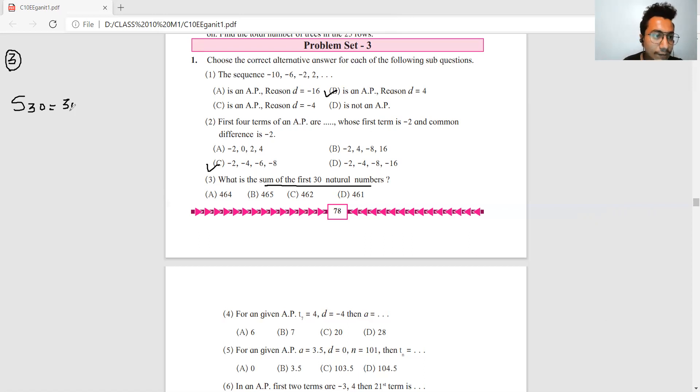So now, n upon 2. n upon 2 means 30 upon 2. The first number is 1 and the last number is 30. So 15 multiplied by 31, your answer is 465. This is a shortcut method you should remember.